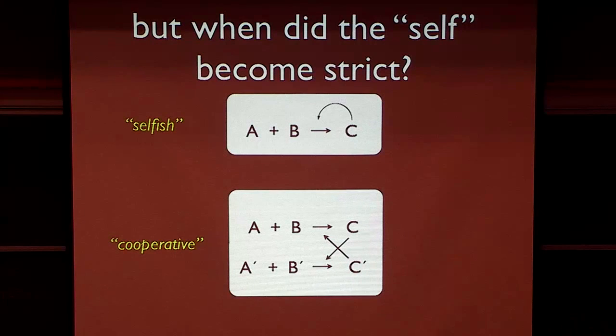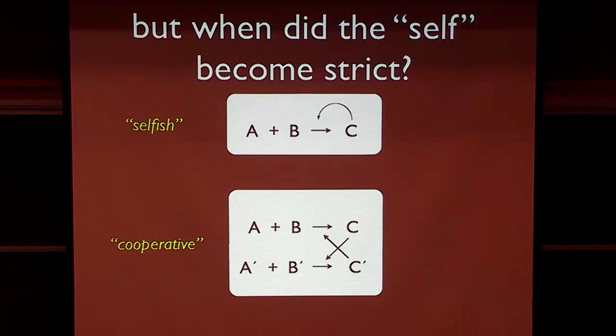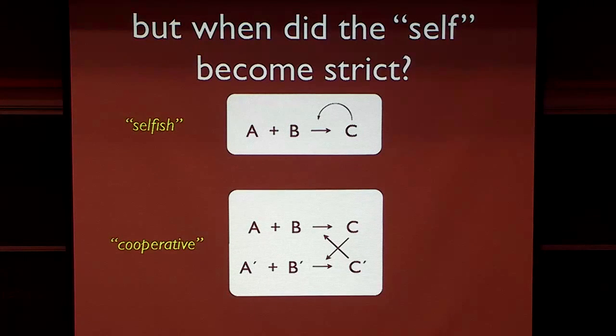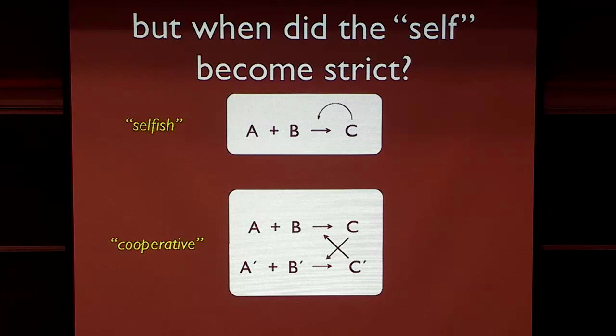much more of a cooperative system where we have two chemical systems, A plus B going to C, and A prime and B prime going to C prime. And if these two pathways can interact such that C prime catalyzes the synthesis of C, and C catalyzes the synthesis of C prime, talk about a tongue twister, then we start to develop a certain amount of rudimentary chemical cooperativity that may have bearings on life.